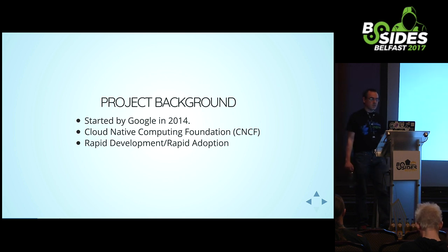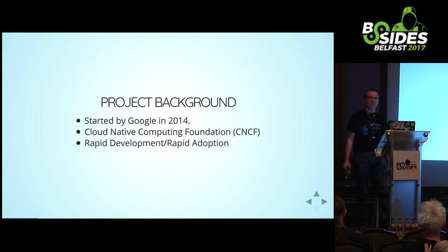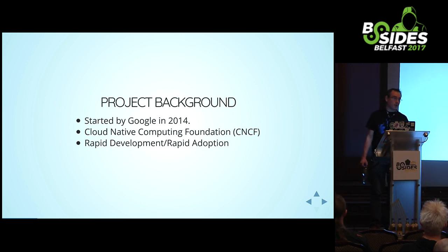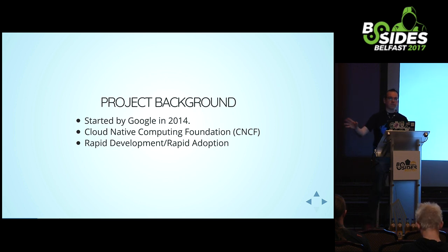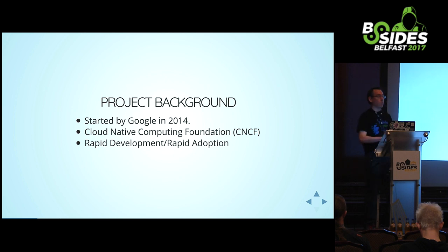Kubernetes got its first public release in 2015 - version 1.0 - so it's not really old code, and it has really rapid development with new major releases every three months or so. One problem I've had talking about security is that they change everything, so recommendations change with each new version. There's also really rapid adoption - banks like Monzo have rolled all their production infrastructure onto Kubernetes, the UK Home Office is a big user, and companies like Walmart and Ocado have announced plans to deploy on it. Real companies, real money being deployed on this stuff.